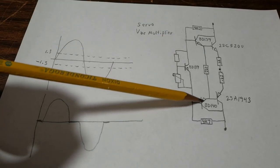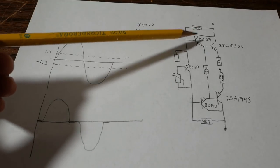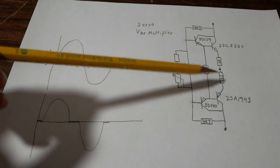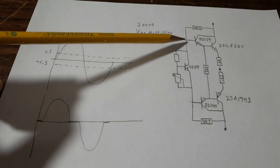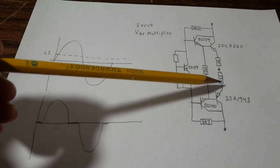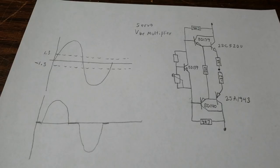And when it conducts more it diverts current away from the output stage and that makes it conduct less. So as these get hotter this conducts more, takes current away and brings the biasing current back into check so you avoid that thermal runaway situation.